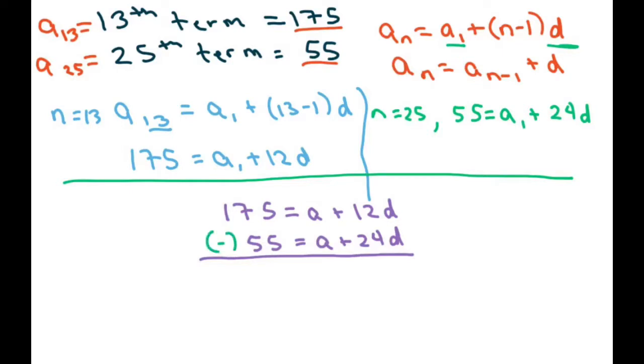So when you subtract these, you get 120, and a minus a is just 0, and 12 minus 24 is negative 12d. Divide both sides by negative 12, you're going to get negative 10 equals your d.